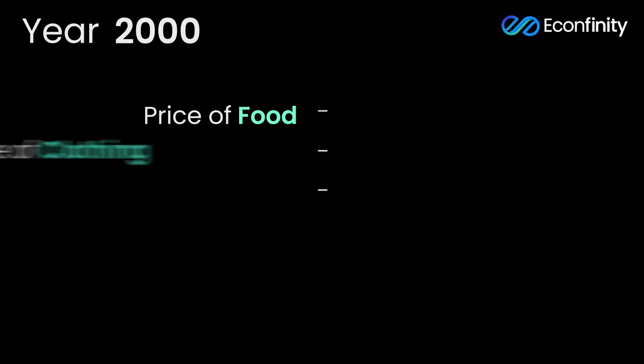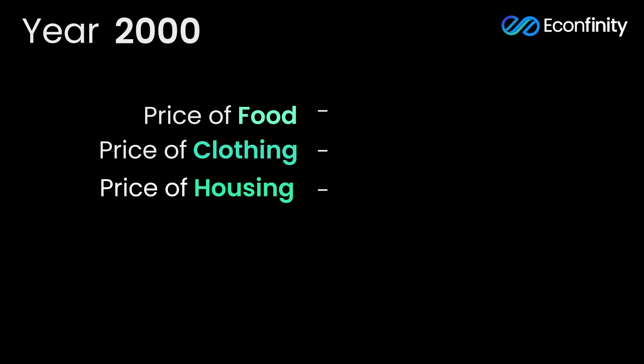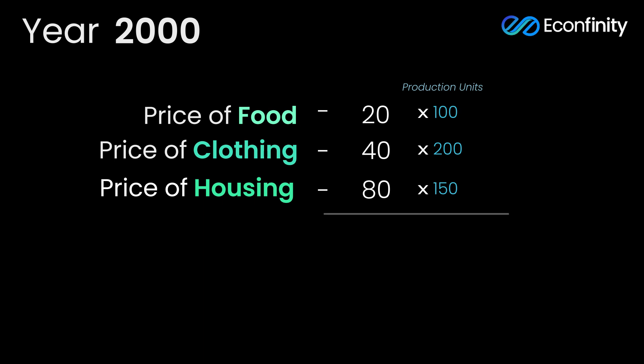That would be the second reason why a country can have higher GDP — but this is nominal GDP. So now we'll get into our illustration. In our hypothetical economy, there are three products: food, clothing, and housing services. For the year 2000–2001, the price of food is 20, clothing is 40, and housing is 80. The total production of food is 100, clothing is 200, and housing is 150. When we calculate GDP for 2000–2001, we arrive at a figure of 22,000.